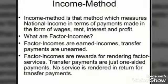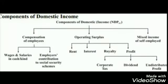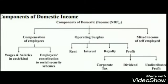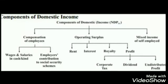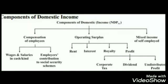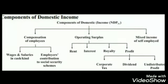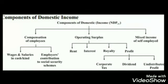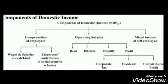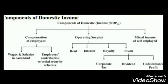When national income is estimated by the income method, there are certain classifications of factor income. The first is compensation of employees, which includes wages and salaries in cash, payments in kind, employees' contribution to social security, and pension on retirement. Second is operating surplus, which includes rent, interest, and profit — where profit is further classified as dividend, corporate profit tax, and undistributed profit. The third is mixed income.